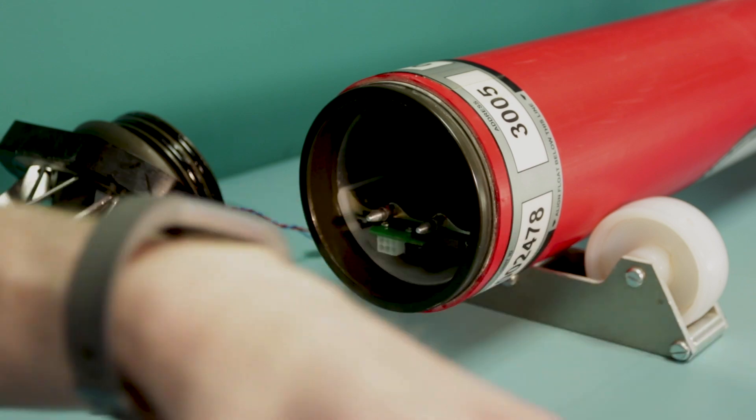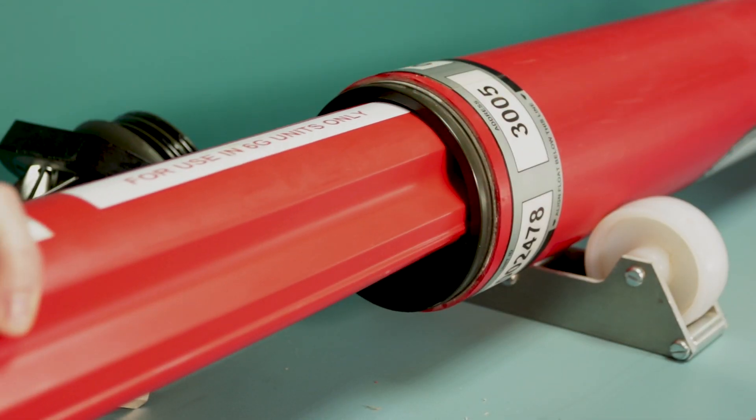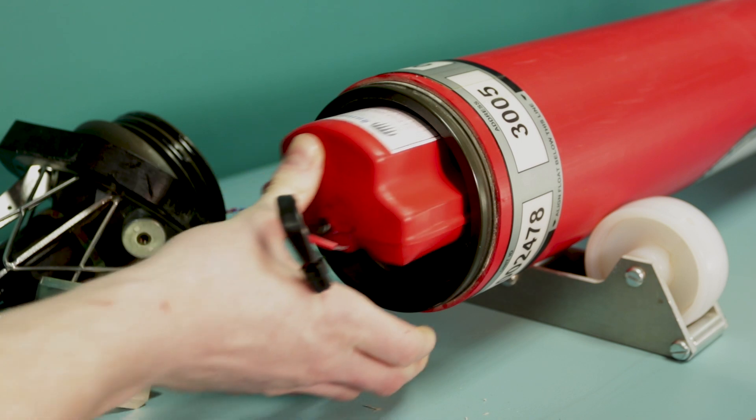Now take the new battery and slide it into the body of the transponder, making sure the connections are facing out.